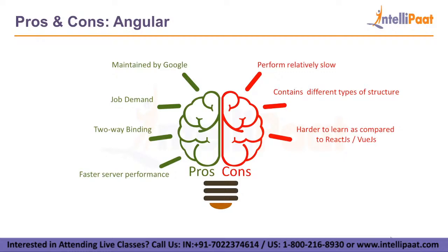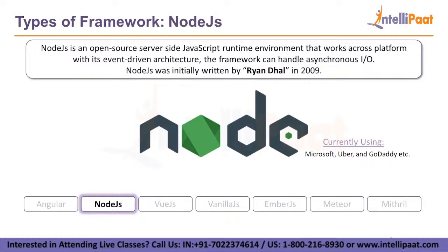Now, moving on to another framework — Node.js. Node.js is an open-source, server-side JavaScript runtime environment that works across platforms. With its event-driven architecture, the framework can handle asynchronous input-output. It runs in the JavaScript runtime environment and displays Java-like features such as threading, packaging, and loop formation. The companies currently using it include Microsoft, Uber, and GoDaddy.